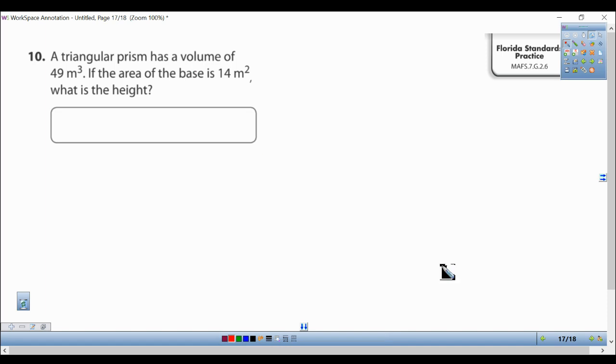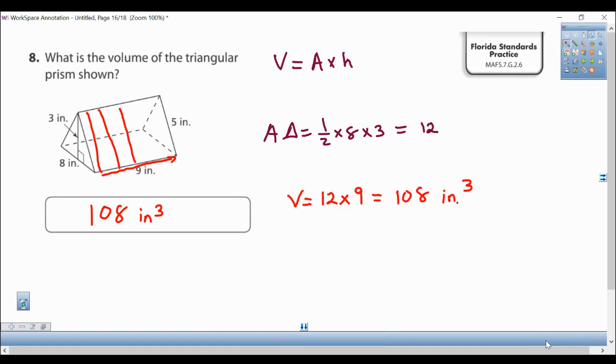Just to show you what a triangular prism is, I was working on a different question. This is what a triangular prism is. It's basically a triangle that has a height and they call it a triangular prism.